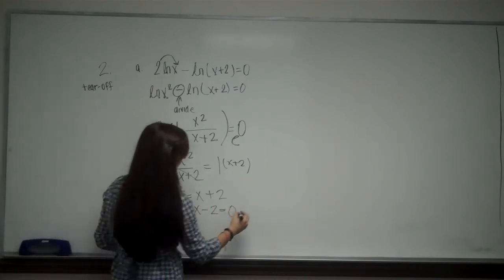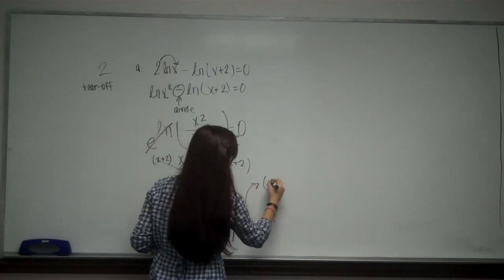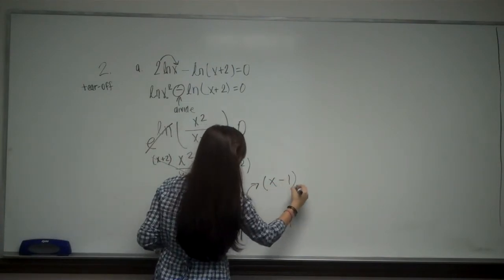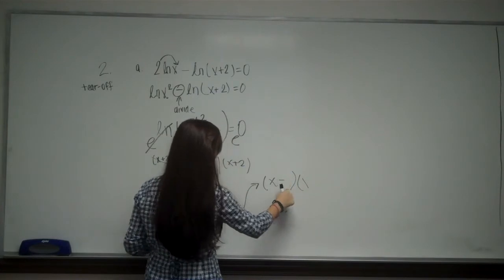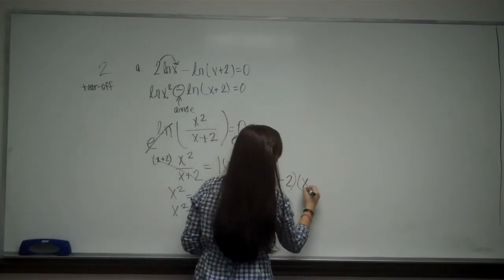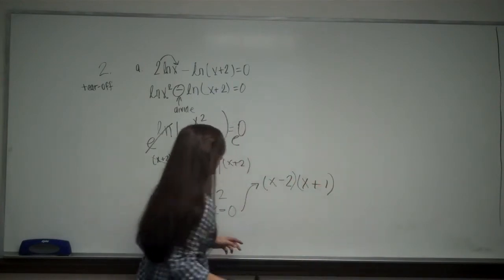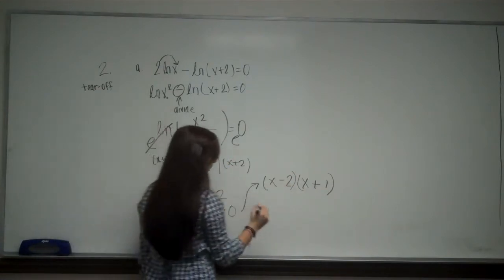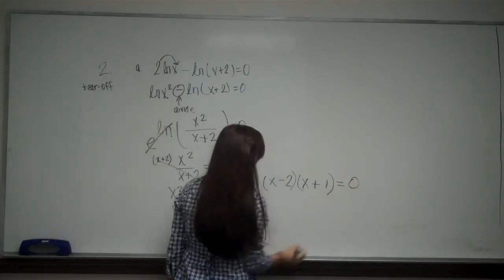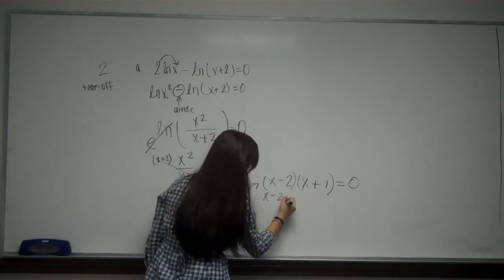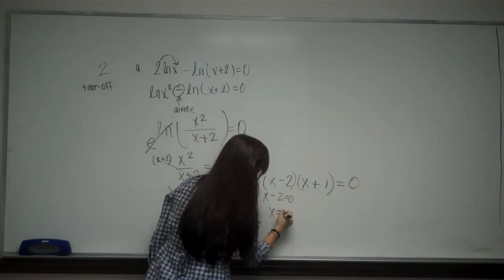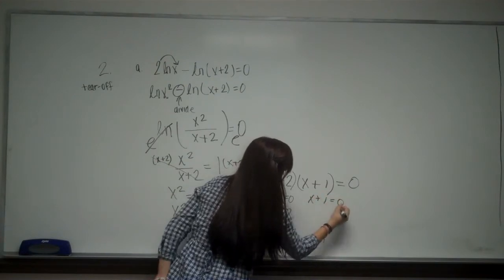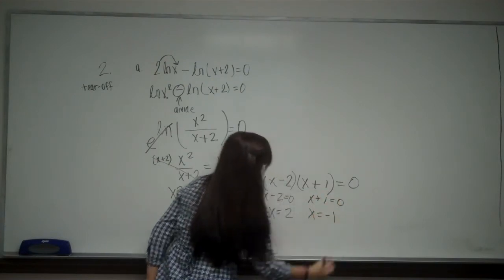This I can factor. I am going to factor it here. I have x minus 2 and x plus 1. Because 1 minus 2 is negative 1 and so forth. So and this equals 0. So from here, I have x minus 2 equals 0, x equals 2. x plus 1 equals 0, x equals negative 1.